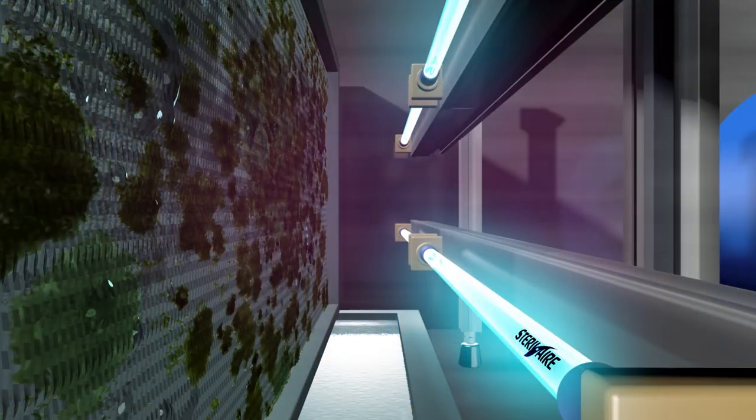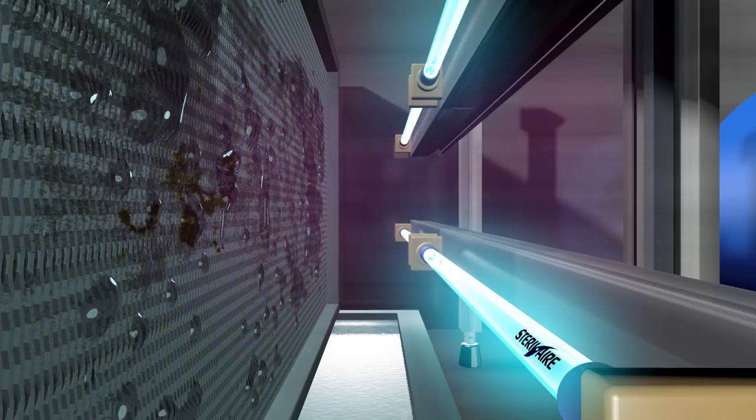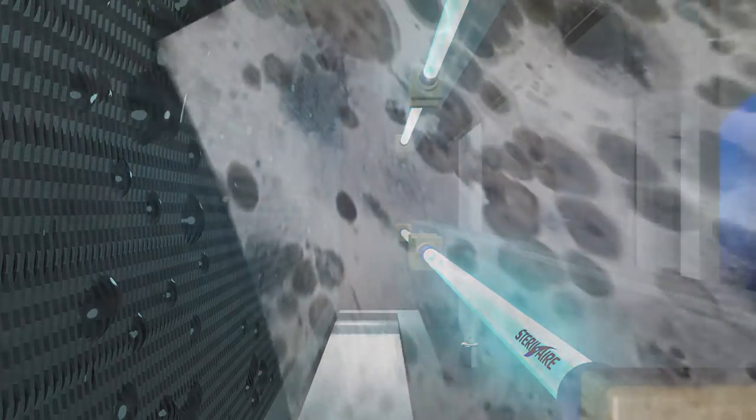Sterile Air's emitters continuously clean the coil fins. The dead mold falls away with the dirt and is washed by the condensate into the drain pan. The biofilm growing in the ducts also dies once it is starved of its food source growing in the coil.